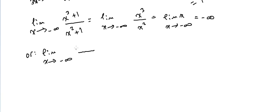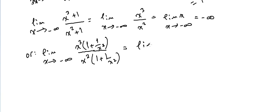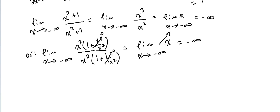I'll solve it another way to be clear. We take x³ as common factor in the numerator and x² in the denominator. That gives x³(1 + 1/x³) over x²(1 + 1/x²). As x approaches minus infinity, 1/x³ approaches 0 and 1/x² approaches 0. Canceling x³ over x² leaves x, so the answer is the same: minus infinity.